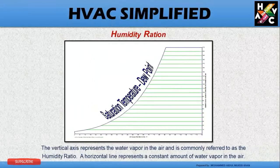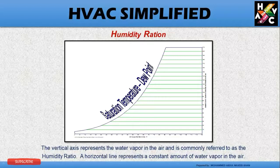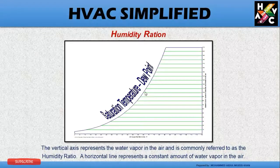The vertical axis represents the water vapor in the air and is commonly referred to as the humidity ratio. The horizontal line represents a constant amount of water vapor in the air, and this horizontal line on the psychrometric chart represents the humidity ratio.